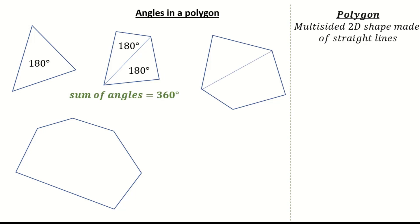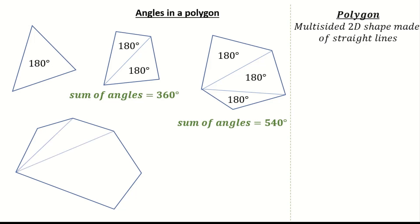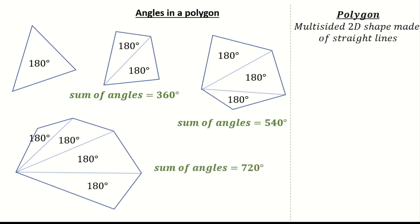For our pentagon you can see the sum of angles is made of 3 triangles so it's 540 degrees. The sum of angles for our hexagon is made up of 4 triangles which gives a sum of angles of 720 degrees.